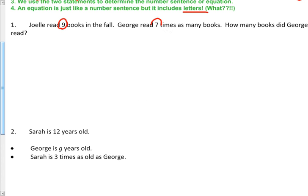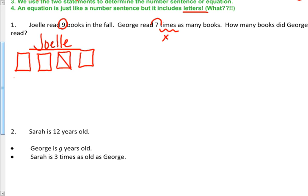So I'm still going to keep my two numbers circled, nine and seven, and I know times means to multiply. So Joel has nine books, I'm going to draw nine squares for my books. Four, five, six, seven, eight, nine.